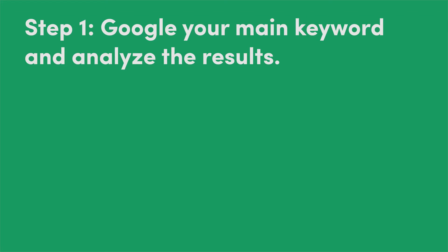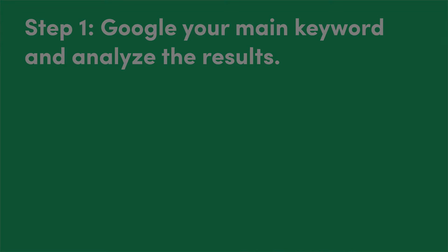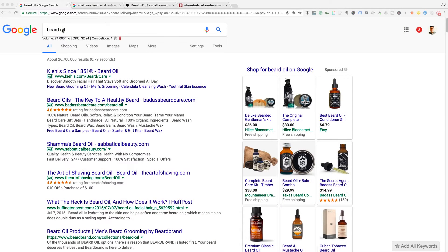Let me give you a practical example of what I'm talking about as we walk through each of the steps you need to take. Step one is to Google your main keyword and analyze the results. This is usually like a head term. So I have Googled beard oil, as you can see here, because SEO and beards, right? So once you've done that, you need to move to step two.